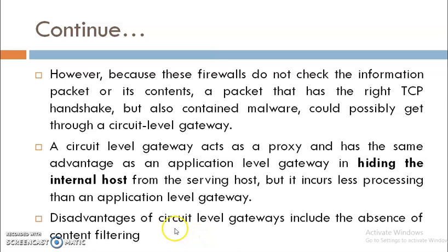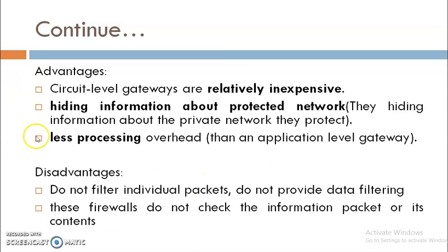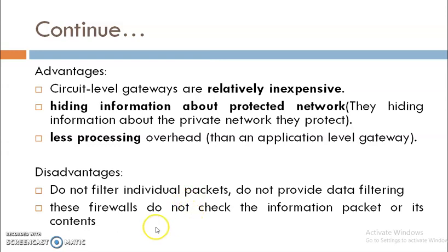The disadvantages of circuit level gateway include the absence of content filtering. The advantages are: they are relatively inexpensive, they hide information about the protected network, and they have less processing overhead. The disadvantages are that they do not filter individual packets based on content and do not check information packets or their content.